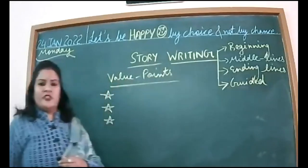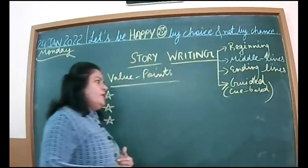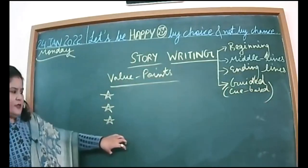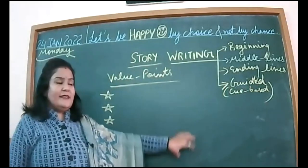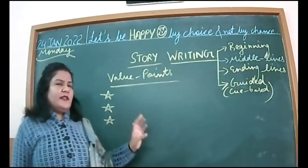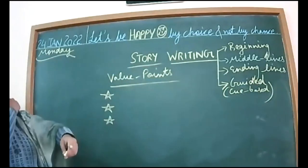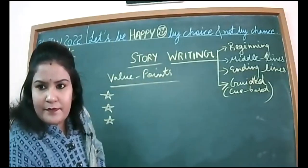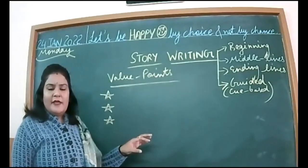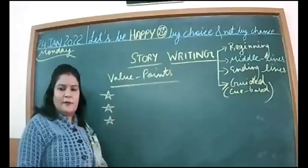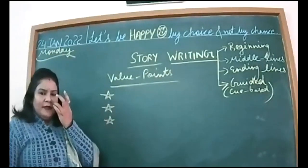The next category is guided composition — also called cue-based. Cues are already written, like: 'Two boys, Ramu and Rahul, went to forest, saw a bear, pretended to be dead, bear went away.' All the fixed thoughts are there, so whatever is written you have to use by adding up your own ideas. There is less chance of creativity in such stories. So these are the categories: beginning lines, middle lines, ending lines, or guided/cue-based.